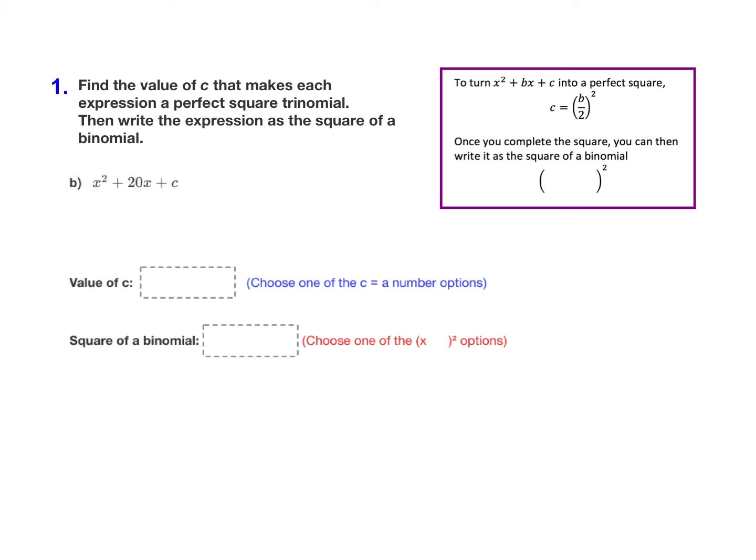In part b, we have a positive b value here. The b is 20. And once again, using our formula, we know that c is equal to b divided by 2 squared. So here, we want to take 20 divided by 2 and square it.